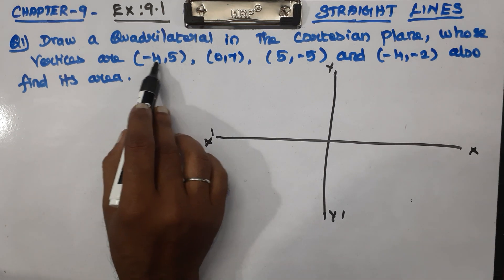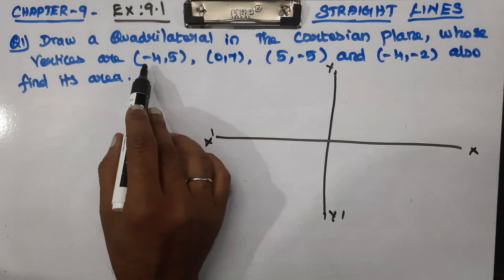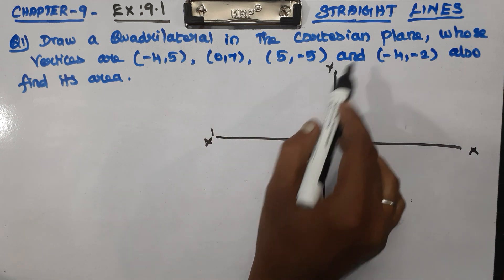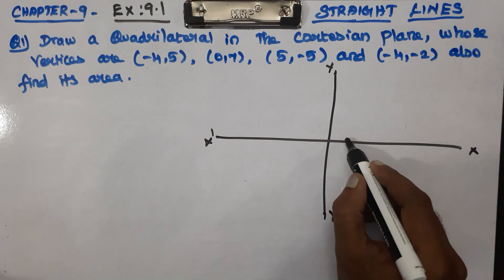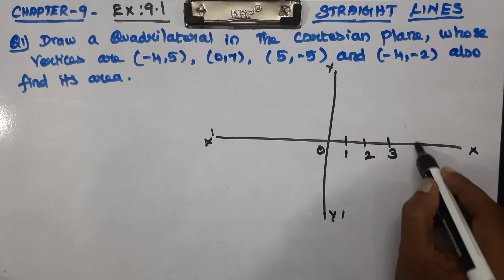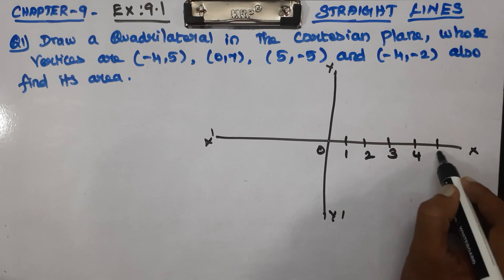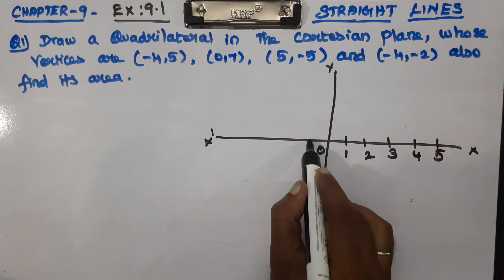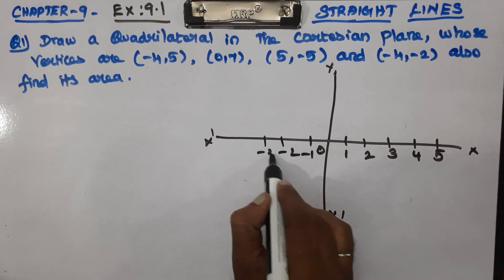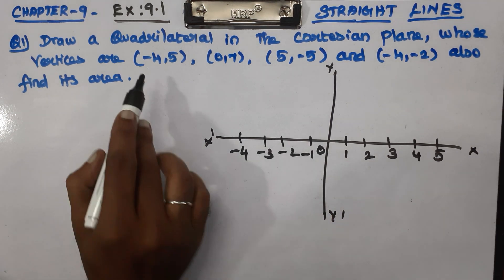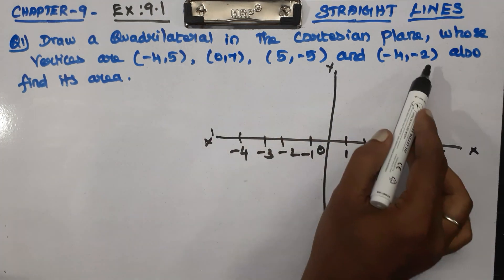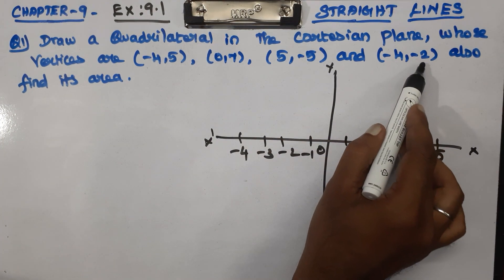Minus 4 is the lowest point, 5 is the highest point on the y-axis. The x-axis goes from 0, 1, 2, 3, 4, 5 and the left side is minus 1, minus 2, minus 3, minus 4. So the x-axis lowest point is minus 2... sorry, minus 5, and the highest point is 7.